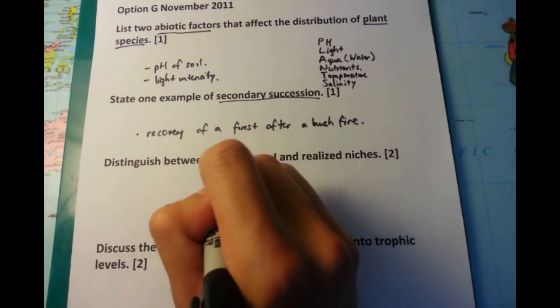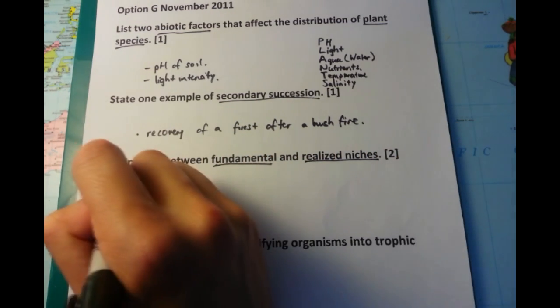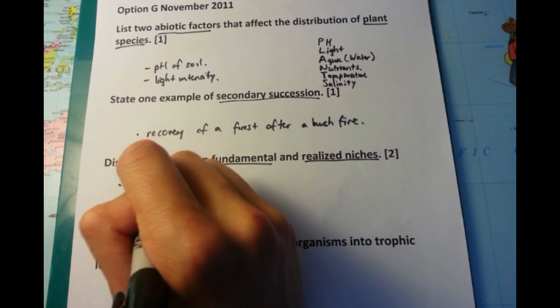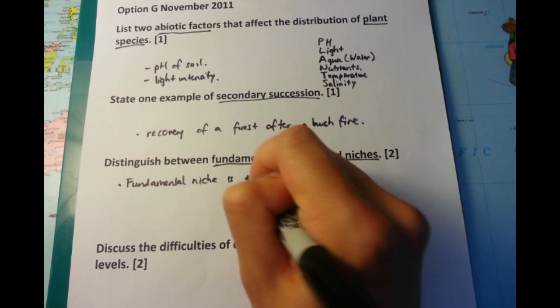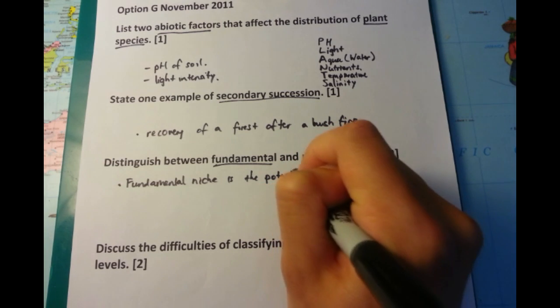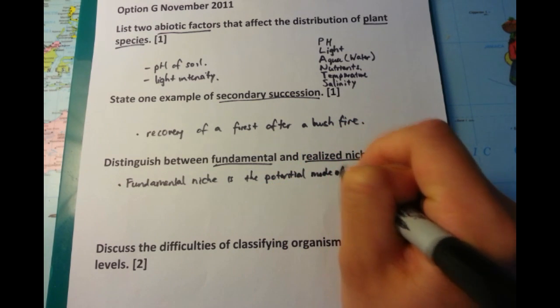Now, the next question, which is worth two marks, is to distinguish between fundamental and realized niches. You will get one point for defining both fundamental and realized niches, but also explaining why they differ and how they differ.